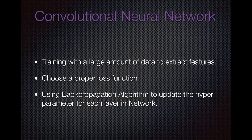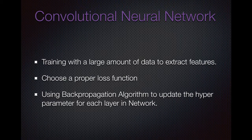For my convolutional neural network, it trains with a large amount of data to extract features. For each image, it has lots of features because it has more than billions of pixels in it. Then we need to choose a proper loss function to carry the loss, which is important to update the hyperparameters. We use a backpropagation algorithm to update the hyperparameters for each layer in the network.